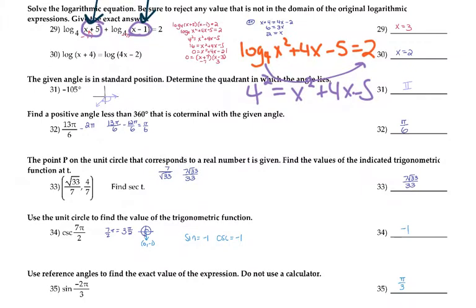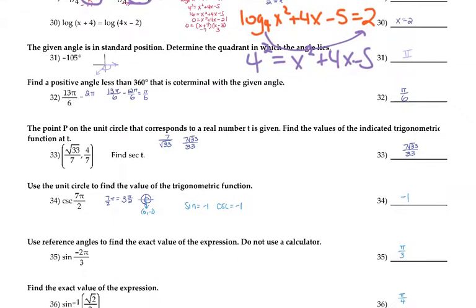Number 31: determine which quadrant. Negative 105 degrees goes backwards past negative 90, which puts it in quadrant 2. Number 32: find a positive angle less than 360 degrees — it has to be smaller than 2 pi. If you added 2 pi it would be bigger than 360, so this time you had to subtract 2 pi, and it's still positive.